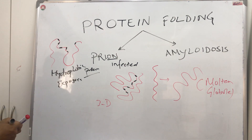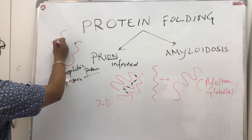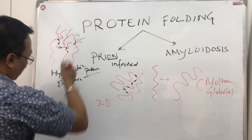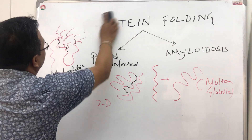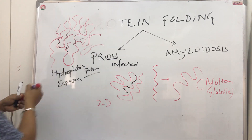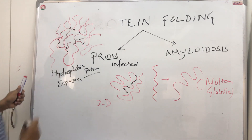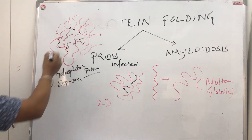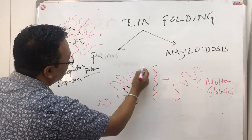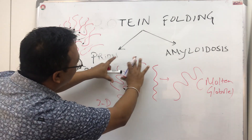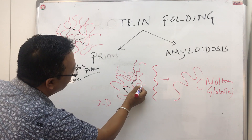When the hydrophobic parts are exposed, they can attract other protein molecules. As a result, more and more proteins attach to these hydrophobic sites from all sides. This happens entirely because of the misfolding — when the protein is not folded properly, the exposed hydrophobic sites attract and accumulate additional proteins.